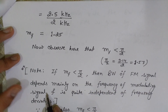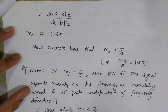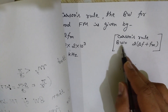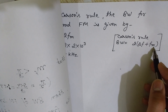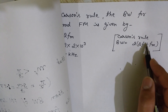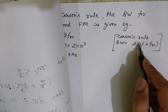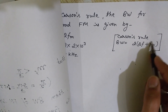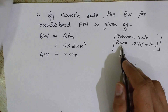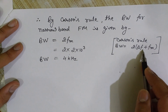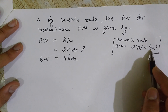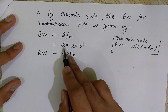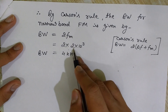If the modulation index is less than pi by 2, then the bandwidth of the FM signal depends mainly on the frequency of the modulating signal and is quite independent of the frequency deviation. So according to Carson's rule, although the bandwidth formula is 2 times (delta F + FM), when modulation index is less than pi by 2, delta F is neglected. The formula becomes simply 2 times FM.